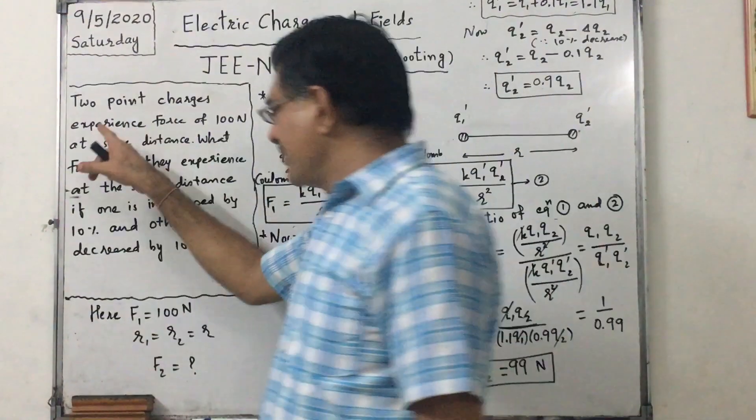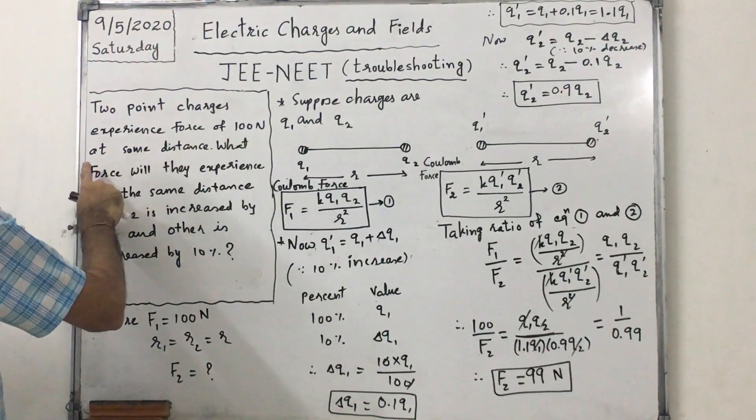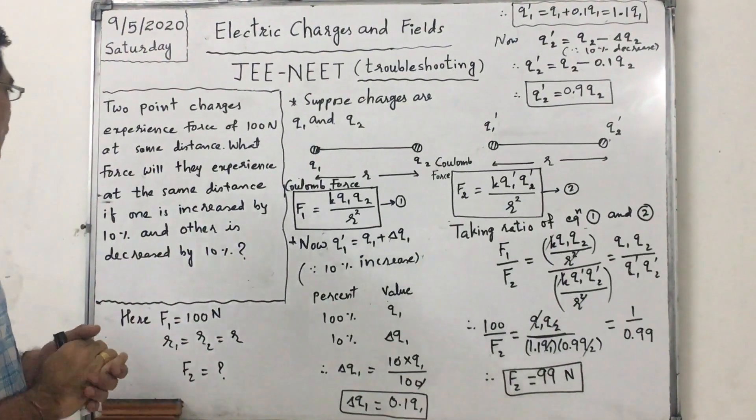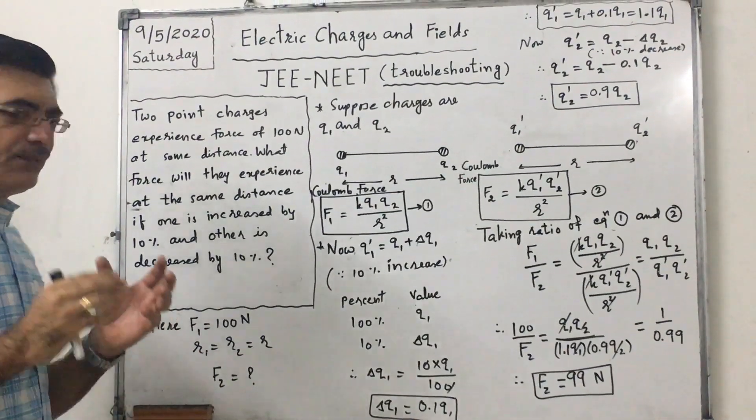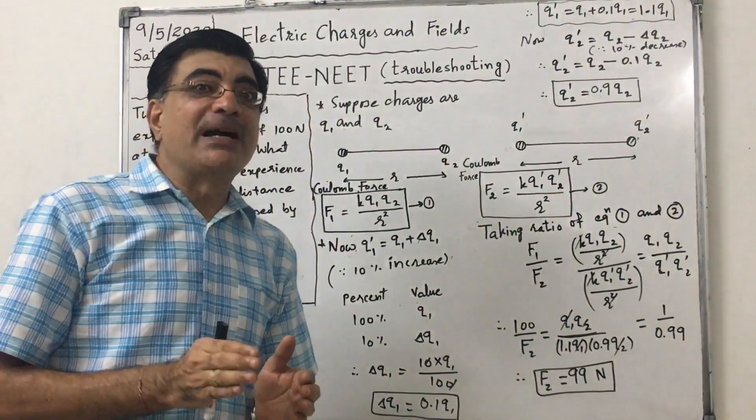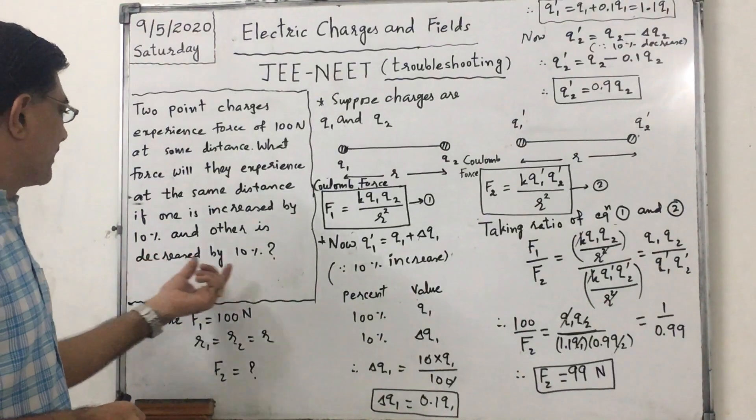The data is: two point charges experience a force of 100 N at some distance. What force will they experience at the same distance if one is increased by 10% and the other is decreased by 10%?